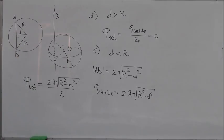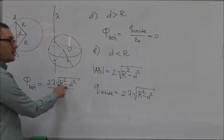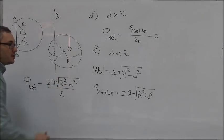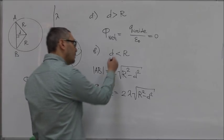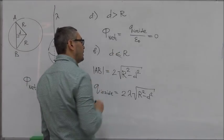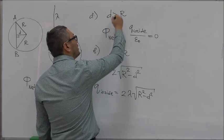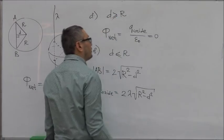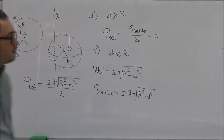So another thing that you can notice here is that when D is equal to R, this becomes equal to 0. So in other words, we can put here less or equal and here bigger or equal. So it matches.